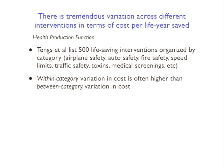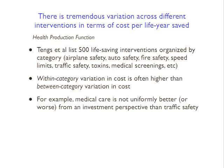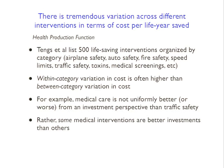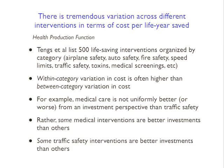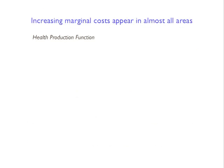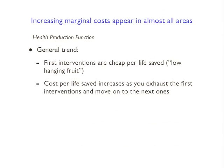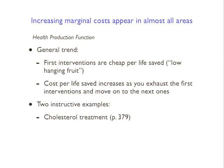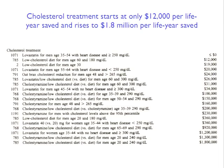Medical care is not uniformly better or worse from an investment perspective than traffic safety - some medical interventions are better investments than some traffic safety interventions, and vice versa. The second dominant theme is evidence of increasing marginal costs in basically all areas. As economists, we're not surprised: there's low-hanging fruit and cheap ways to do something at the beginning, but you start running out of cheap ways and have to substitute more expensive ones. The general trend is that first interventions are cheap per life saved regardless of category, and cost per life saved increases as you exhaust those low-hanging fruit.